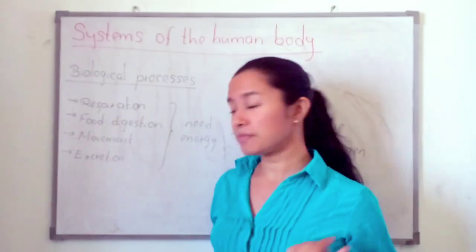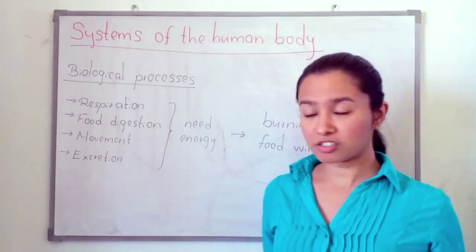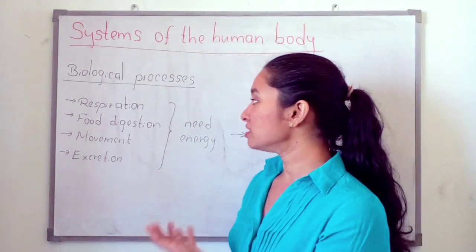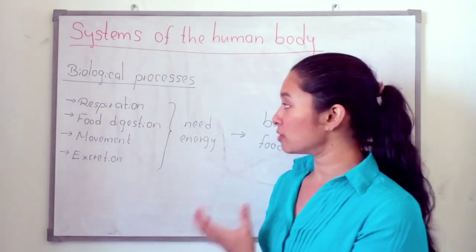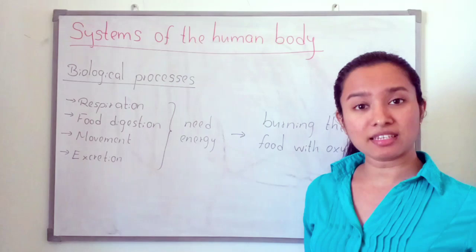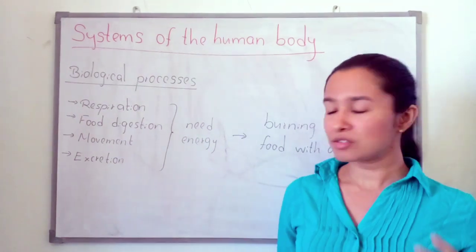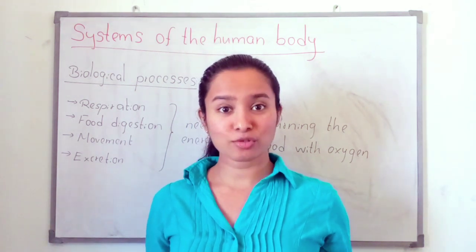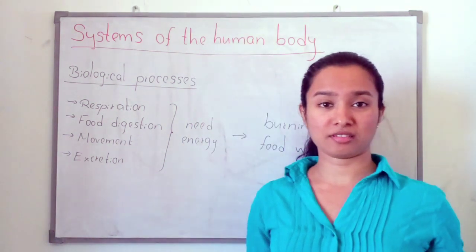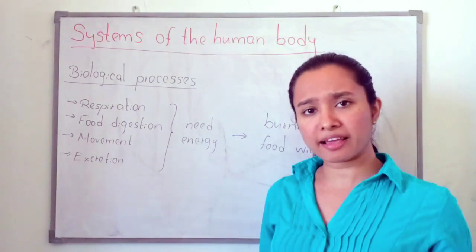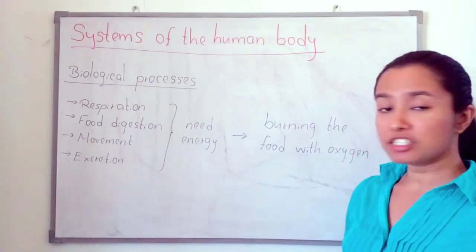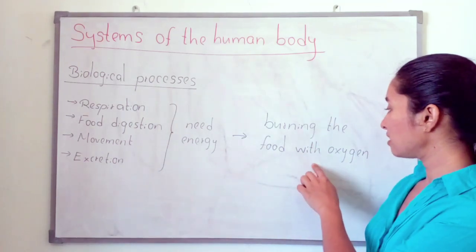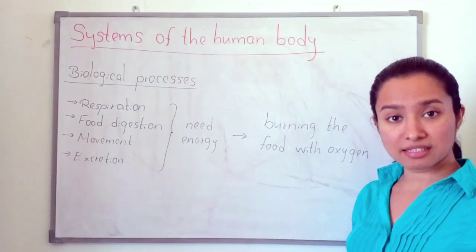What are the biological processes? For example: respiration, food digestion, movement, excretion — these are some of the biological processes that take place in our body. So, energy is needed to do these activities and reactions. How is the energy taken? The energy is taken by burning the food — burning the food with oxygen in the cells.